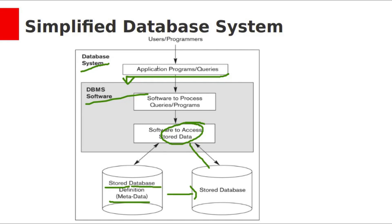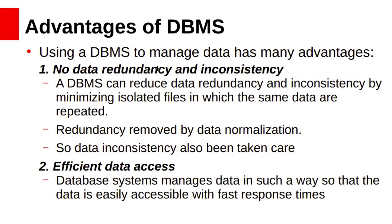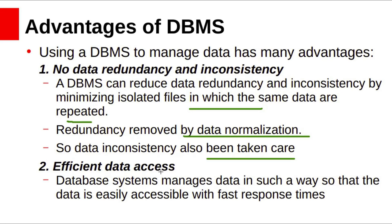We have seen that early information systems based on file systems suffer from data redundancy, difficulty in accessing data, inconsistency, concurrent access issues, data isolation, data integrity problems, atomicity problems, and security problems. This kind of database system solves all those problems. Using DBMS to manage data has many advantages. There is no redundancy and inconsistency — data redundancy and inconsistency can be reduced by minimizing isolated files with repeated data. Redundancy can be removed using data normalization concepts provided by DBMS. Efficient data access: DBMS uses indexes to reach data, and unlike file systems, DBMS uses a special language called SQL to modify and access data easily, resulting in faster response time.